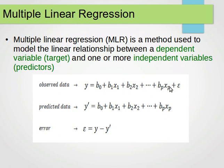X1, X2 through Xp are our predictors or features. We want a bias term B0 to help move the plane to the left and right, as explained in previous videos. This is the observed or actual data. For the predicted variable Y-prime, it equals B0 plus B1X1 plus B2X2 all the way to BpXp. The difference between observed and predicted is the error. If we have p parameters or predictors, then we're estimating p plus 1 coefficients — the B's — where B0 is the intercept.